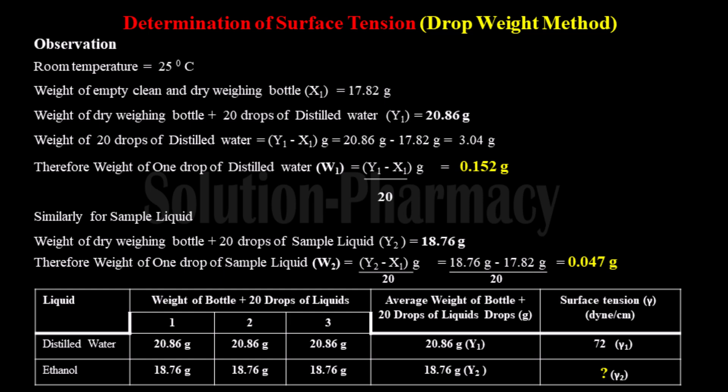Similarly, we have to perform the same calculation for the weight of one drop of sample liquid. The weight of 20 drops of sample liquid with the weighing bottle, denoted by y2, is 18.76 grams. We then subtract the weight of the empty bottle (x1) from y2 to determine the weight of 20 drops of ethanol, and then divide by 20 to find the weight of one drop.